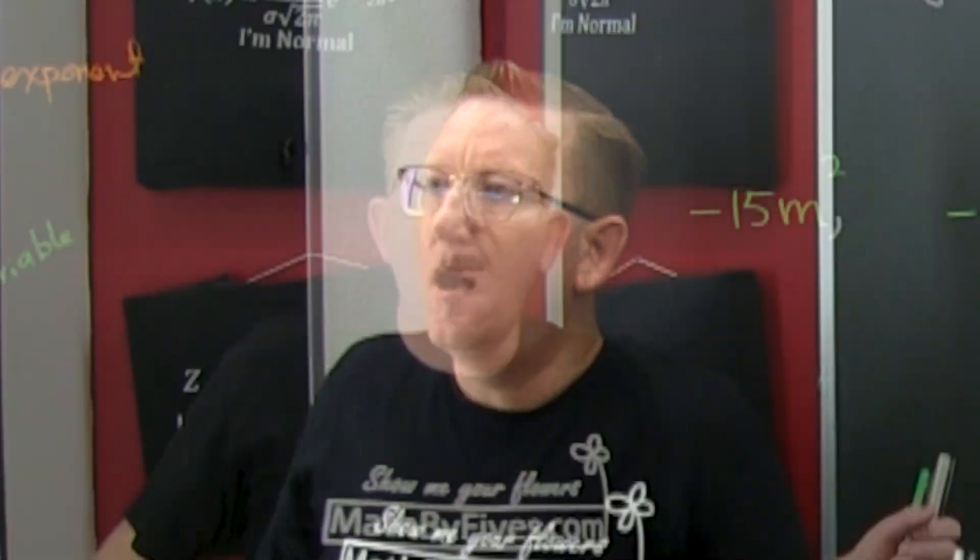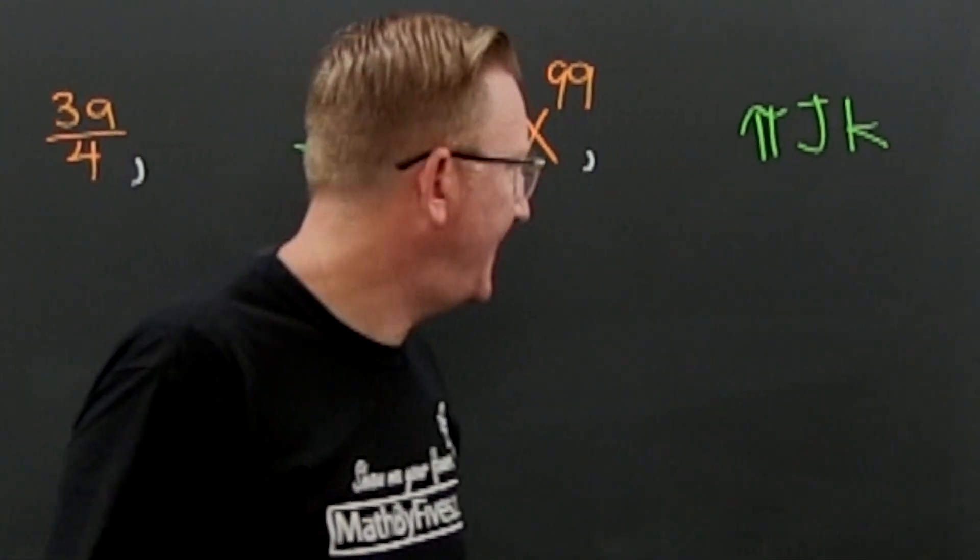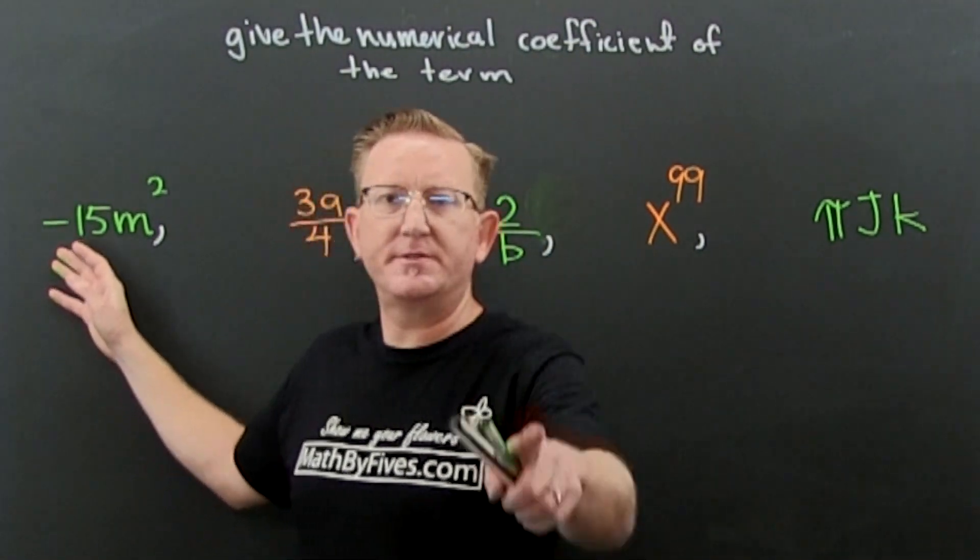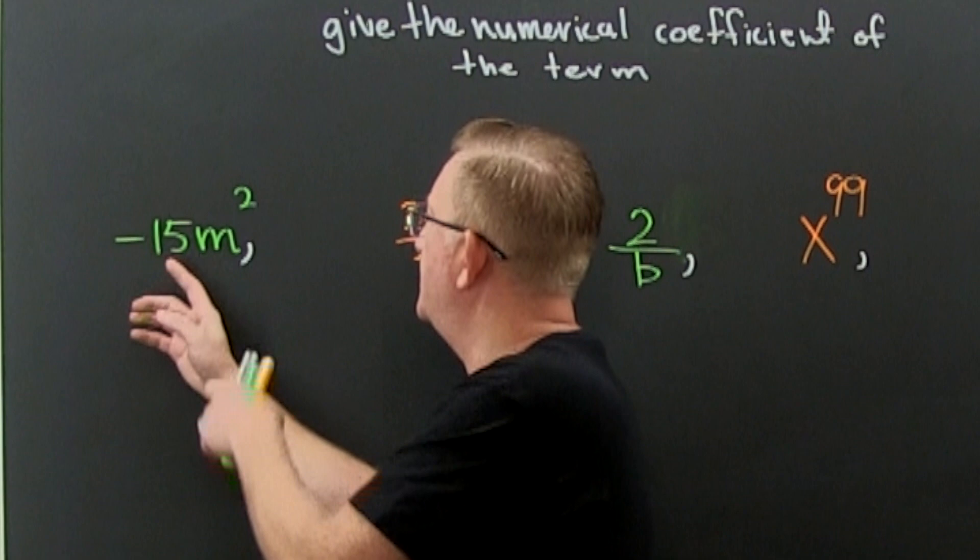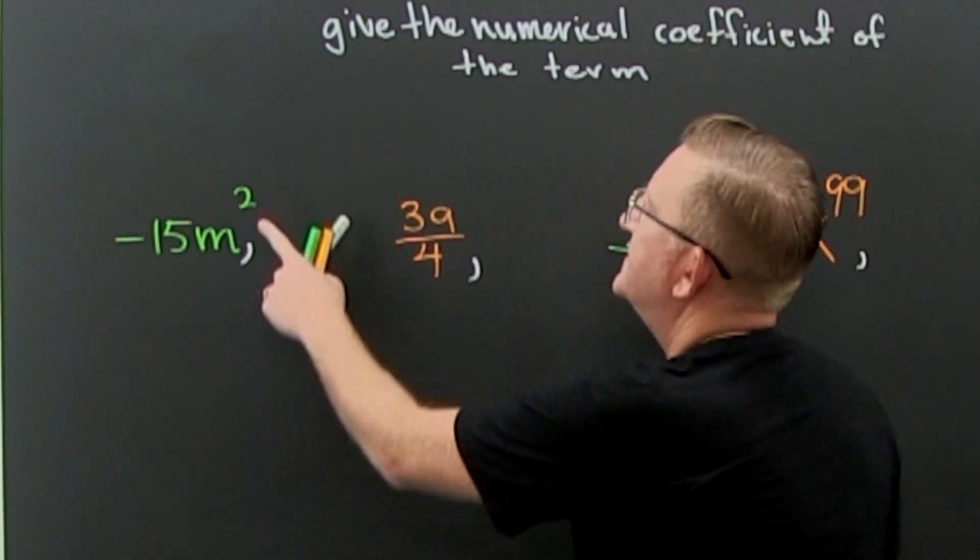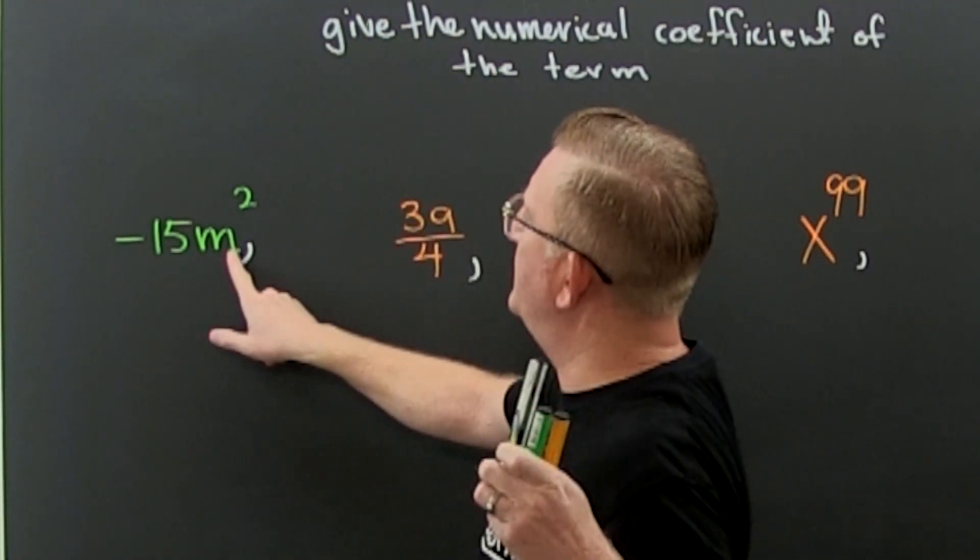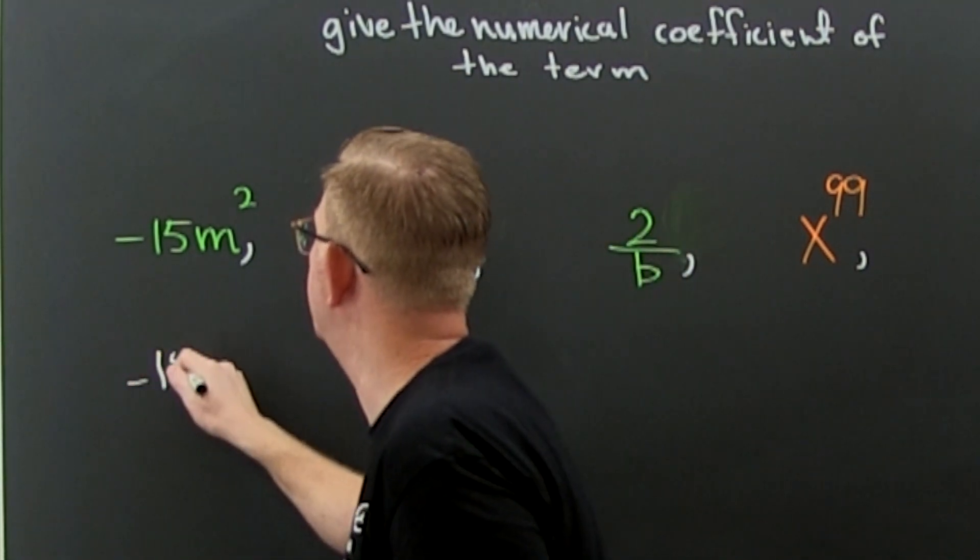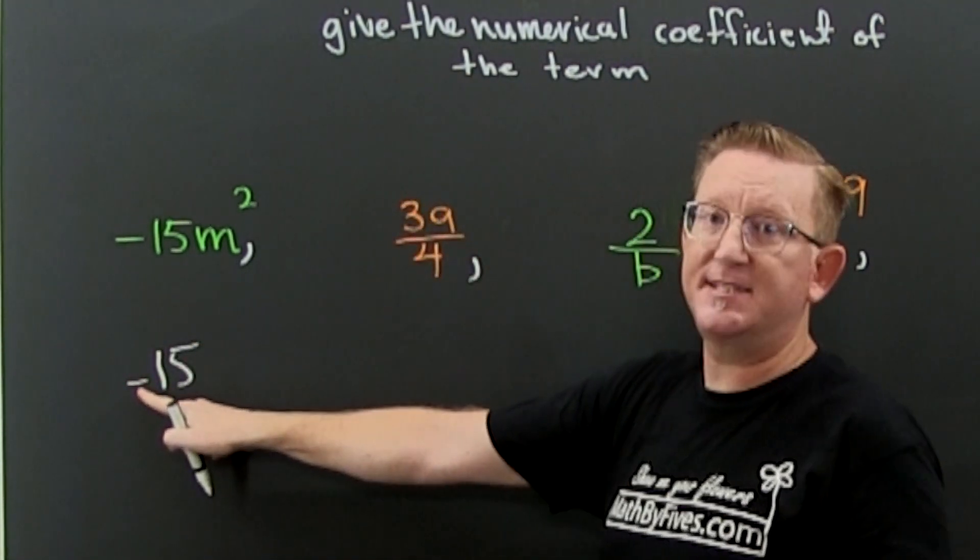Five examples, let's get to this one first. What's the number? That's the exponent, that's the variable. The number in front is the 15, so the numerical coefficient is minus 15. Yes, the sign sticks with it.